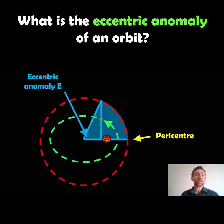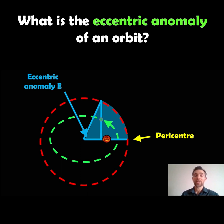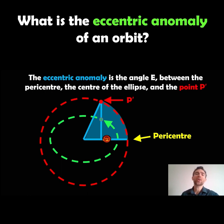The eccentric anomaly is not the same as the true anomaly. Here we have an elliptical orbit, which is the green one, and a red circular orbit. Instead of taking the angle from the star along the elliptical orbit as in the true anomaly, you take the angle from the centre of the ellipse. You draw a vertical line up from the major axis through where the body is, and it projects onto the circular orbit. The angle from where it intersects the circle to the centre of the ellipse is your eccentric anomaly E.